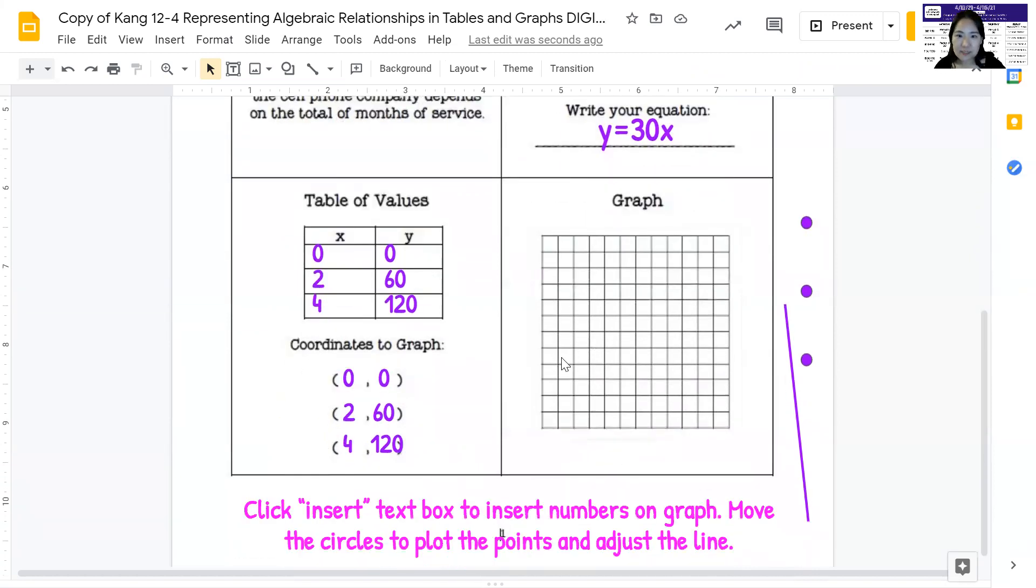Now, this is the most difficult part, I think. Let's click insert text box to insert numbers on graph, move the circles to plot the points. That part's going to be easy. And then, adjust the line. So what do I need? So this is something that I didn't cover when I did the video for 12-1, because I didn't think we'll need to do that here. But I need to talk quickly about scales. So when you look at your x coordinates here, it only goes from zero to four.